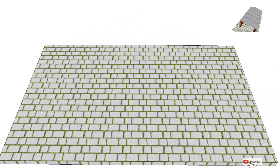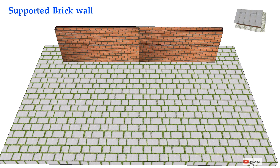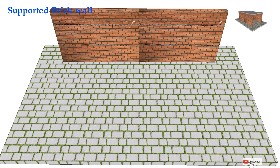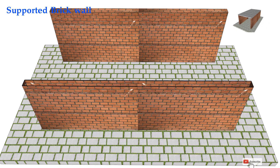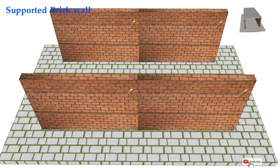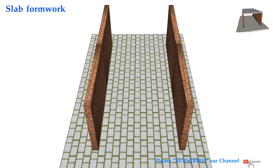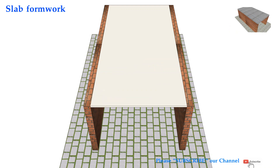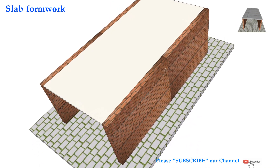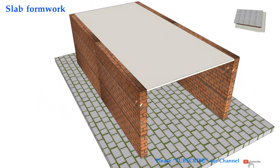One-way slab is spanning in the shorter direction with main reinforcement and the distribution of reinforcement in the transverse direction. In the next video I will introduce to you two-way slab, which is different from one-way slab. Look forward to seeing the video coming soon. If you find this video helpful, please subscribe, like, comment and share. Thank you so much.